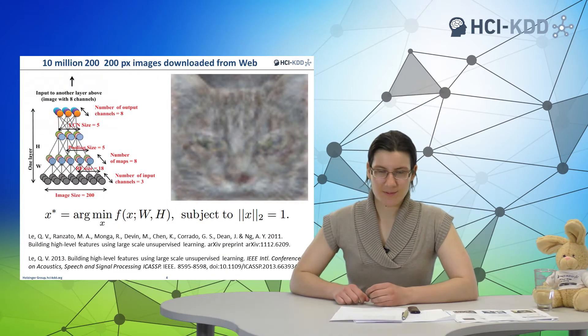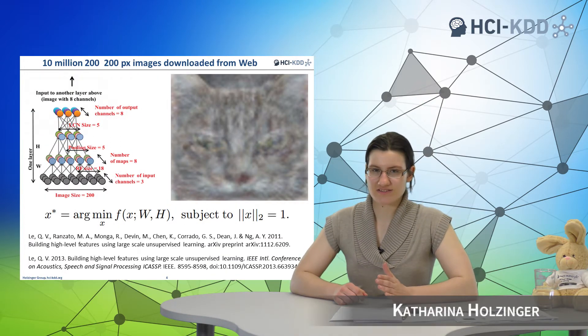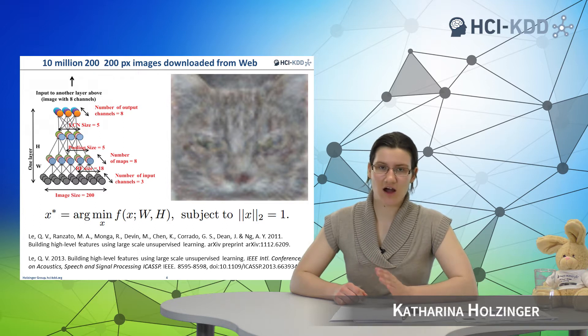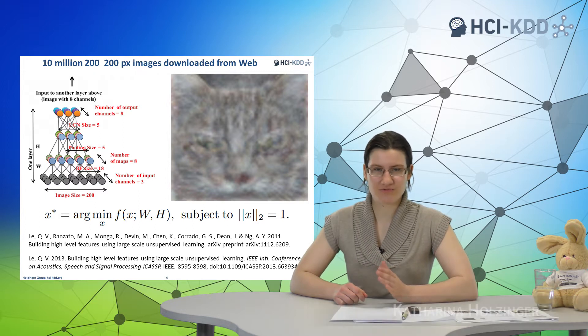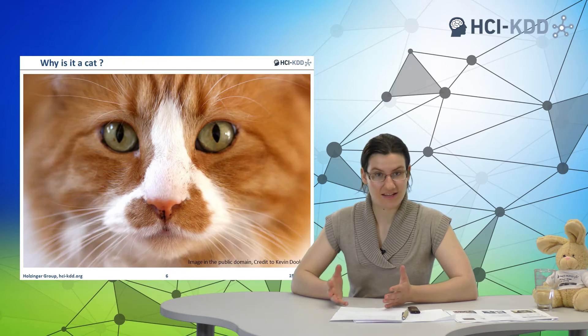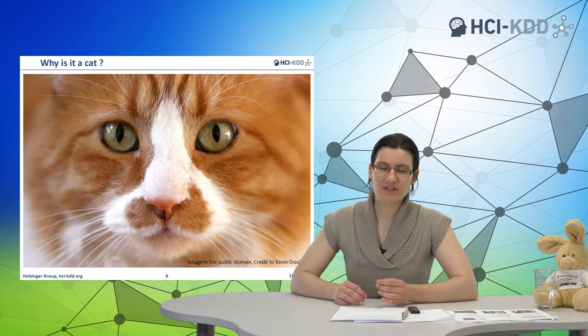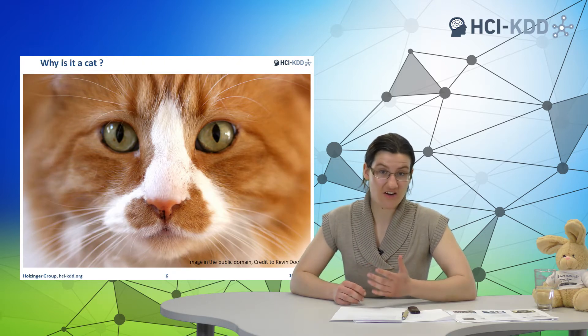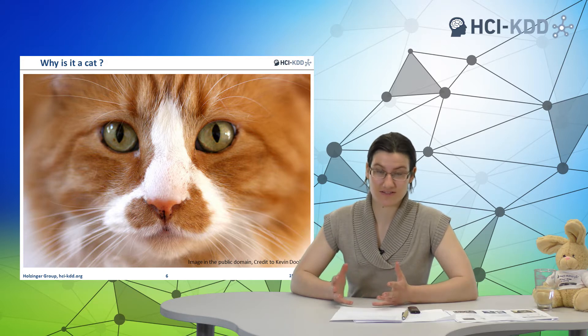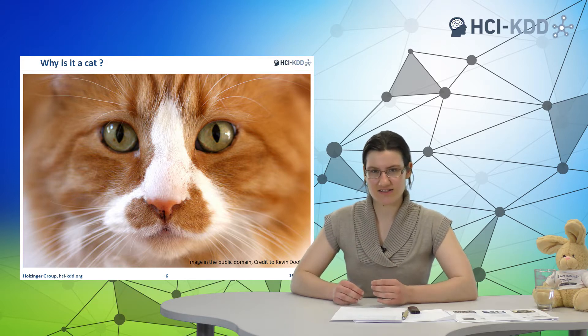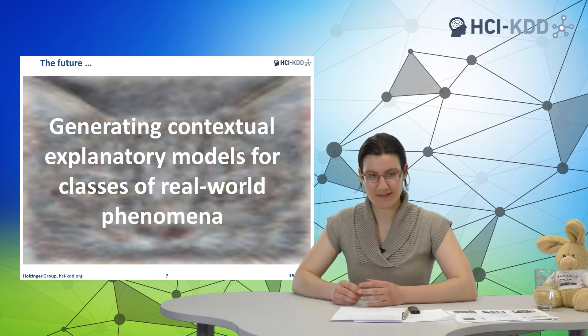Such deep learning algorithms might be statistically impressive, but individually they still are unreliable. And so the question remains, what makes a cat a cat? For this, however, we would need context adaptation. Current AIs, as impressive as they may be, still cannot answer the question why certain decisions have been made.